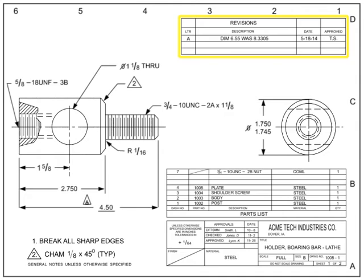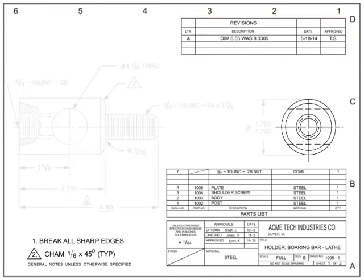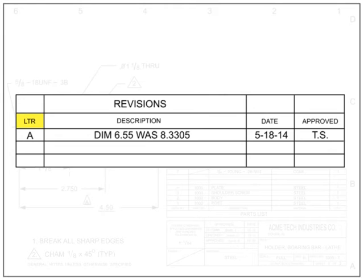The revisions block is a tabulated list of the revisions that have changed the original drawing. It is typically located in the upper right-hand corner of the drawing, although some drafting standards attach it to the title block. The sequence for revision letters starts with A as the first revision, followed by B for the second, and so on. A drawing that has had no revisions has a blank revisions block. The description area contains the general change information and what prompted the change. Documents that initiate drawing changes are called Engineering Orders, Engineering Change Orders, or Engineering Change Proposals, which are given a number and referenced in the description of the change.